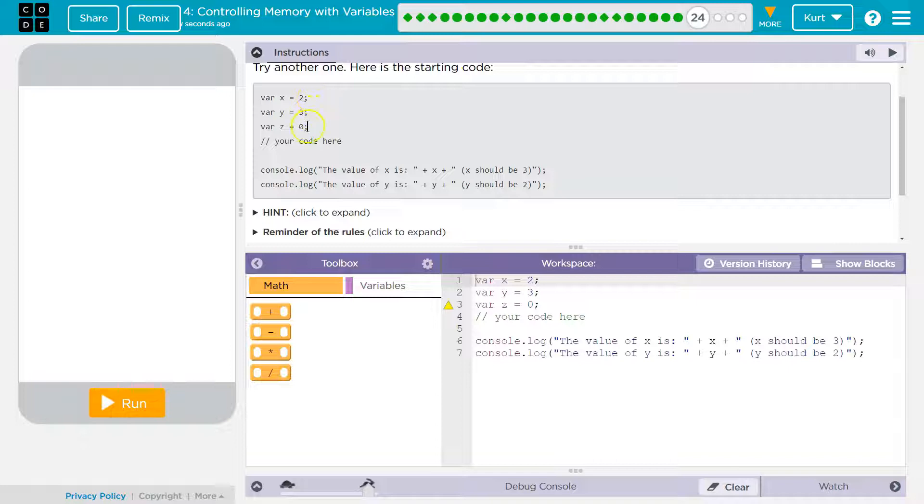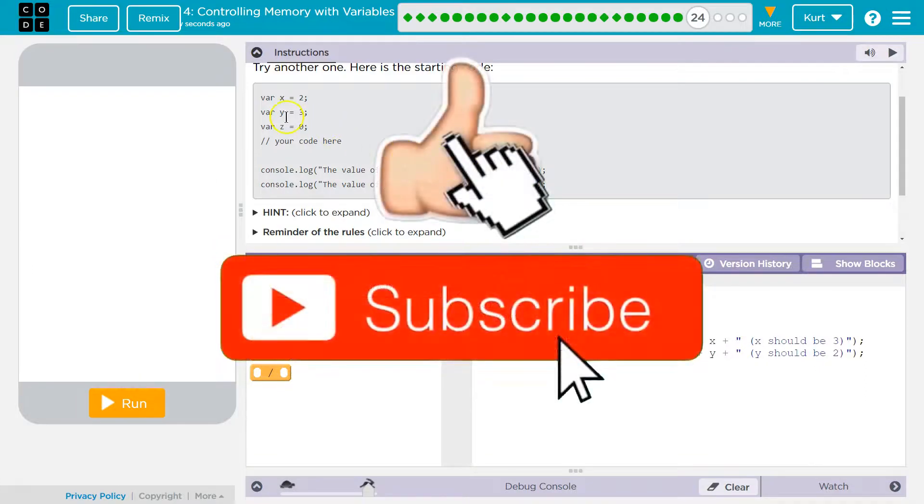Here's the starting code: X equals 2, Y equals 3, Z equals 0. We want X to be 3 - it starts at 2. And the value of Y should be 2 - it starts at 3.